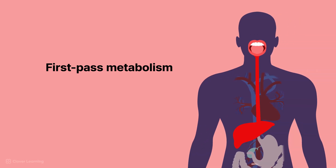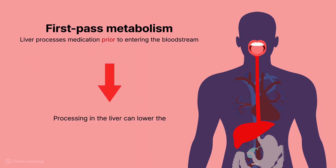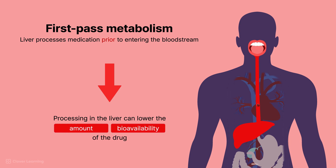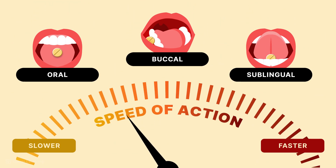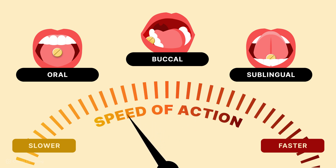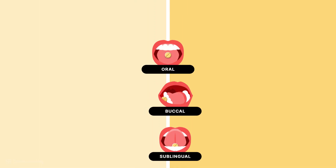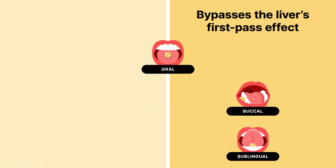First-pass metabolism refers to the processing of medication through the liver prior to entering the bloodstream. This processing in the liver can potentially lower the amount of the drug, or its bioavailability, that eventually enters the bloodstream and is absorbed by the body. For speed of action, sublingual administration offers the quickest absorption, followed by buccal and then oral. Both buccal and sublingual routes bypass the liver's first-pass effect, where hepatic metabolism reduces the amount of the drug available for circulation, unlike oral administration.